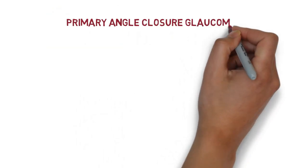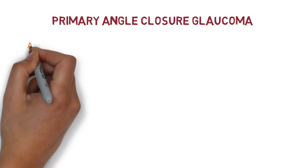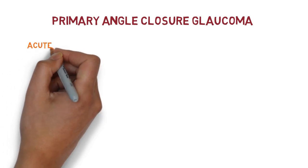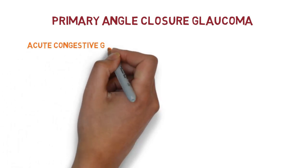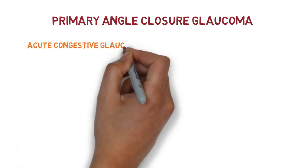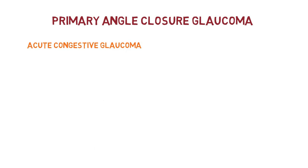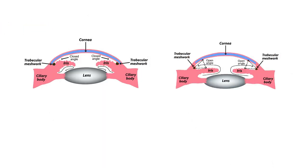Primary angle closure glaucoma is also called acute congestive glaucoma. We recommend watching the previous video on the basics of glaucoma — you can see the link in the upper right corner — for better understanding of this lecture.